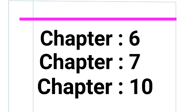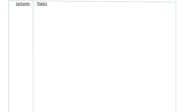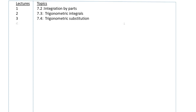First we will start from chapter 7. The sections of this book will be 7.2, integration by parts; 7.3, trigonometric integrals; 7.4, trigonometric substitution; 7.5, integrating rational functions by partial fractions.